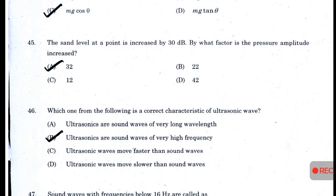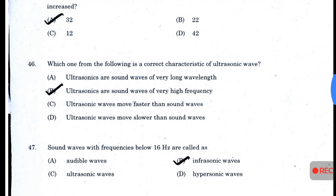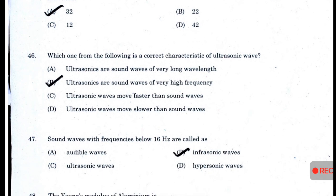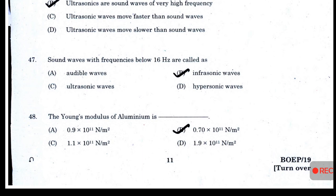The sound level at a point is increased by 30 dB. By what factor is the pressure amplitude increased? Answer A — 32. Which of the following is a correct characteristic of ultrasonic waves? Ultrasonics are sound waves of very high frequency. Sound waves with frequency below 16 Hz are called infrasonic waves.